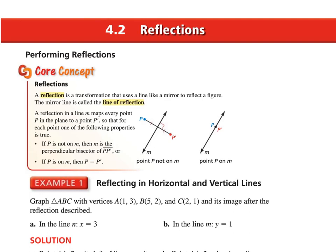Starting lesson 4.2: Reflections. So what is a reflection exactly? I'm just going to summarize it for you. We have this point P and this line M. A reflection in line M of point P essentially takes it to the other side. If we draw a perpendicular line, it's going to take that point the same distance away from the line over to the other side. Same distance as the blue line, and then I end up with my P prime here.